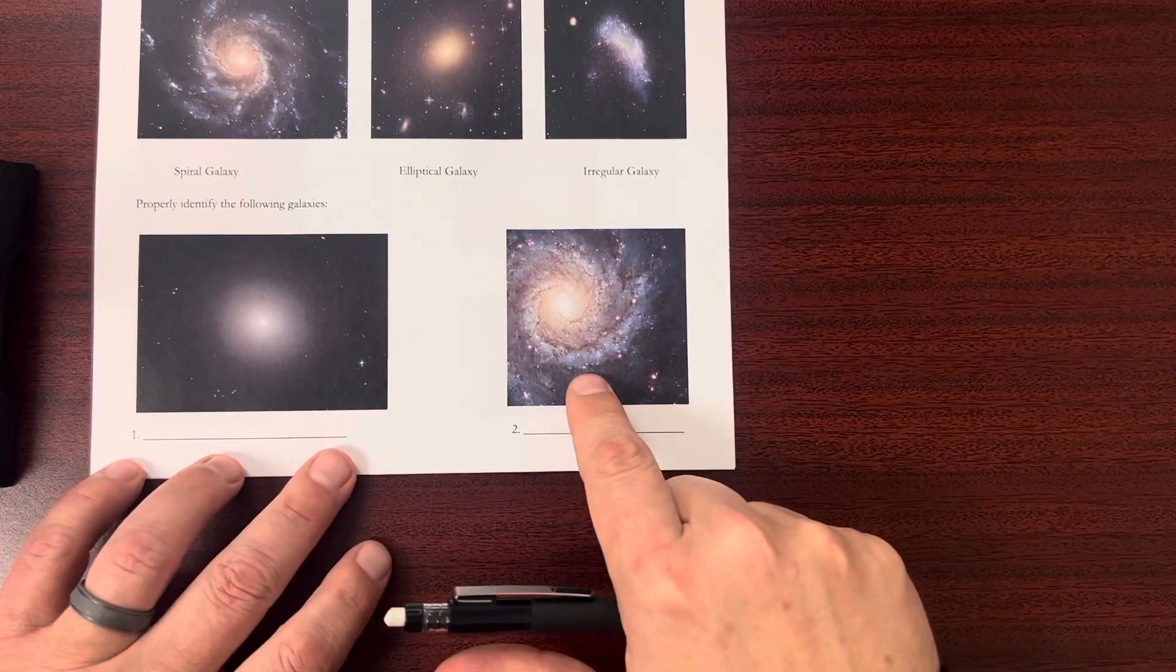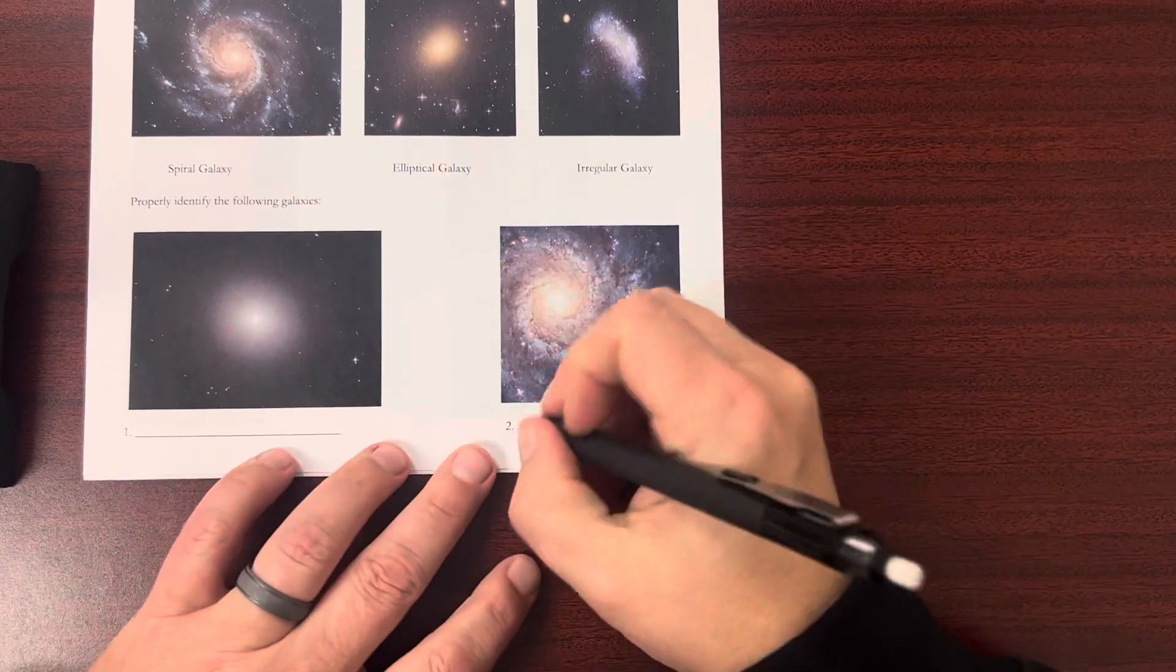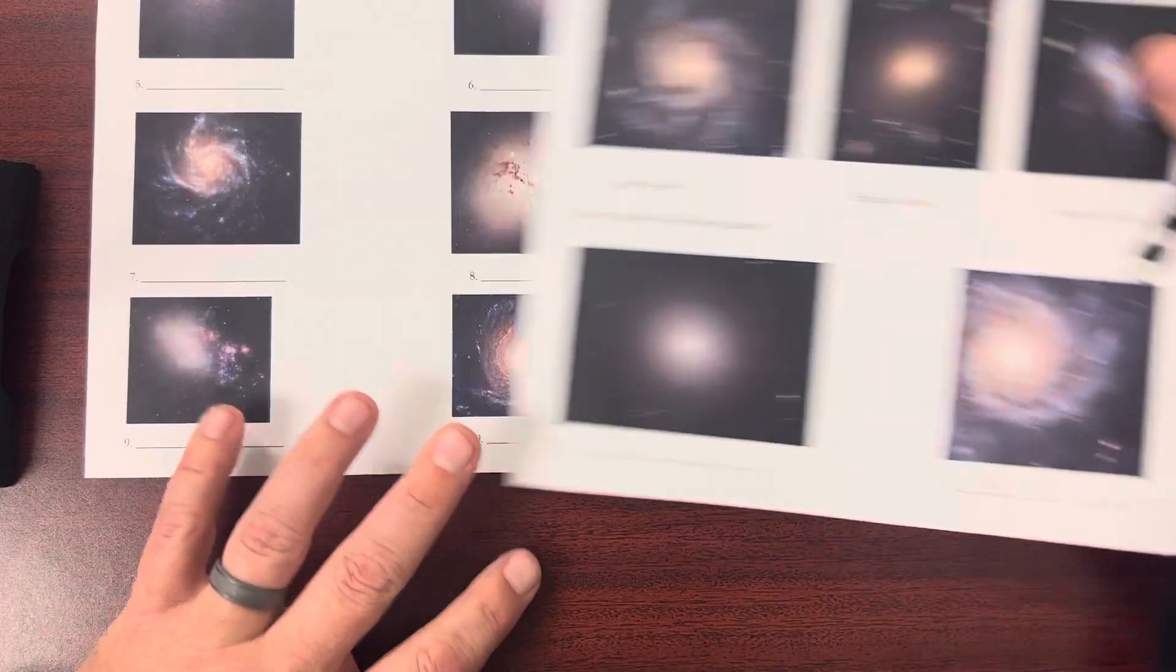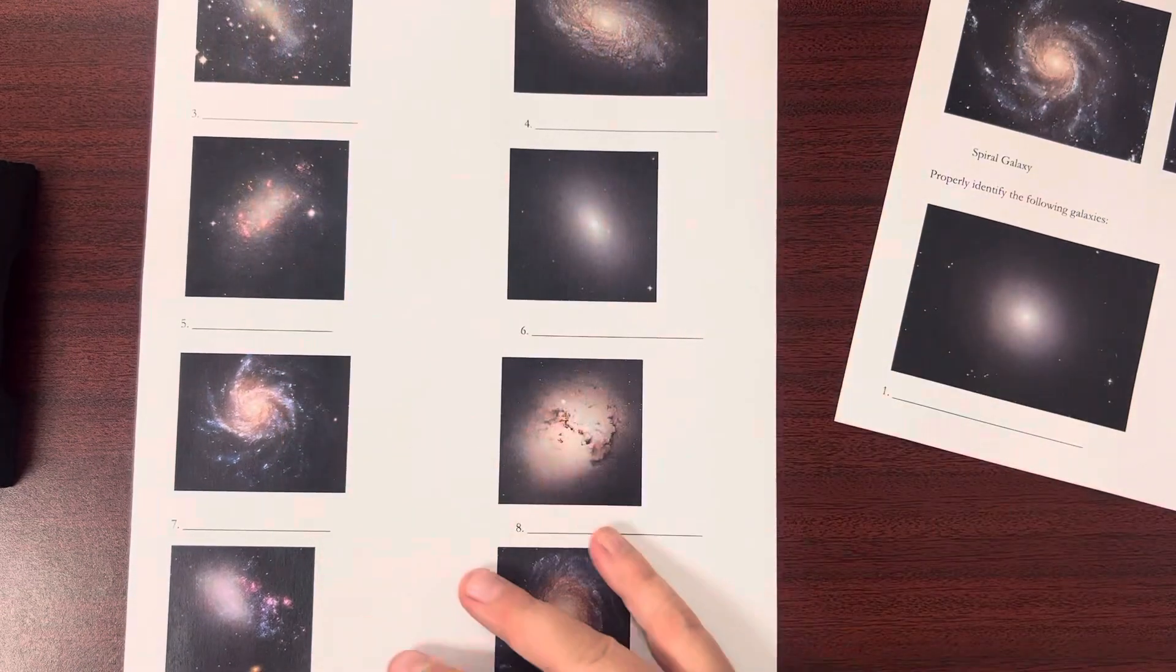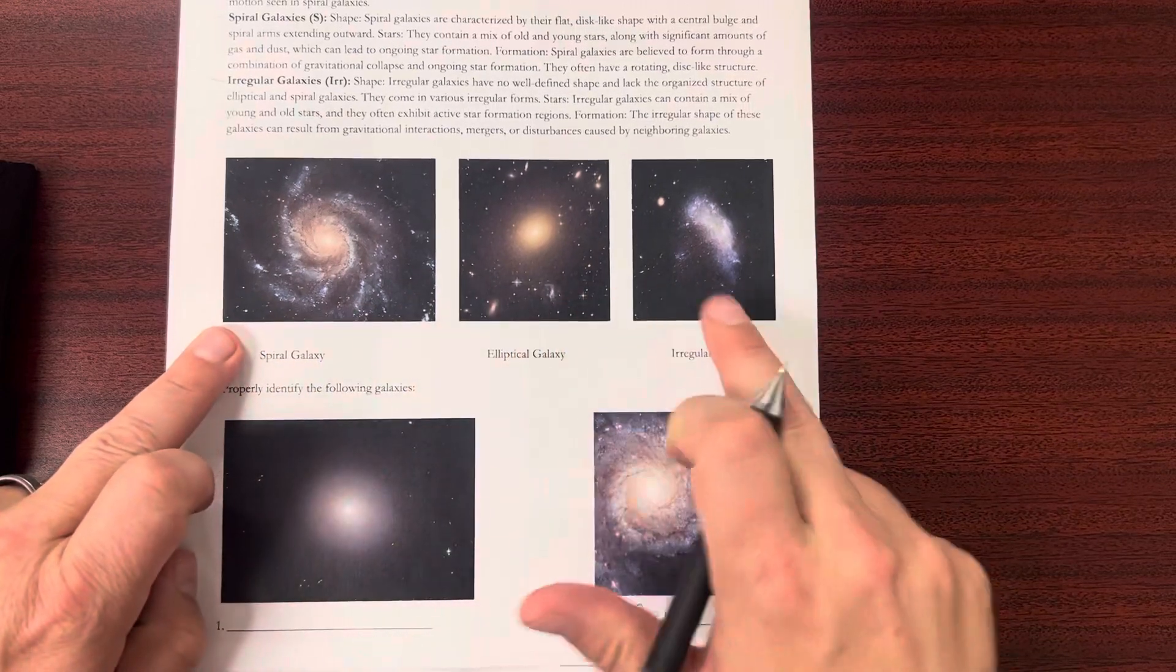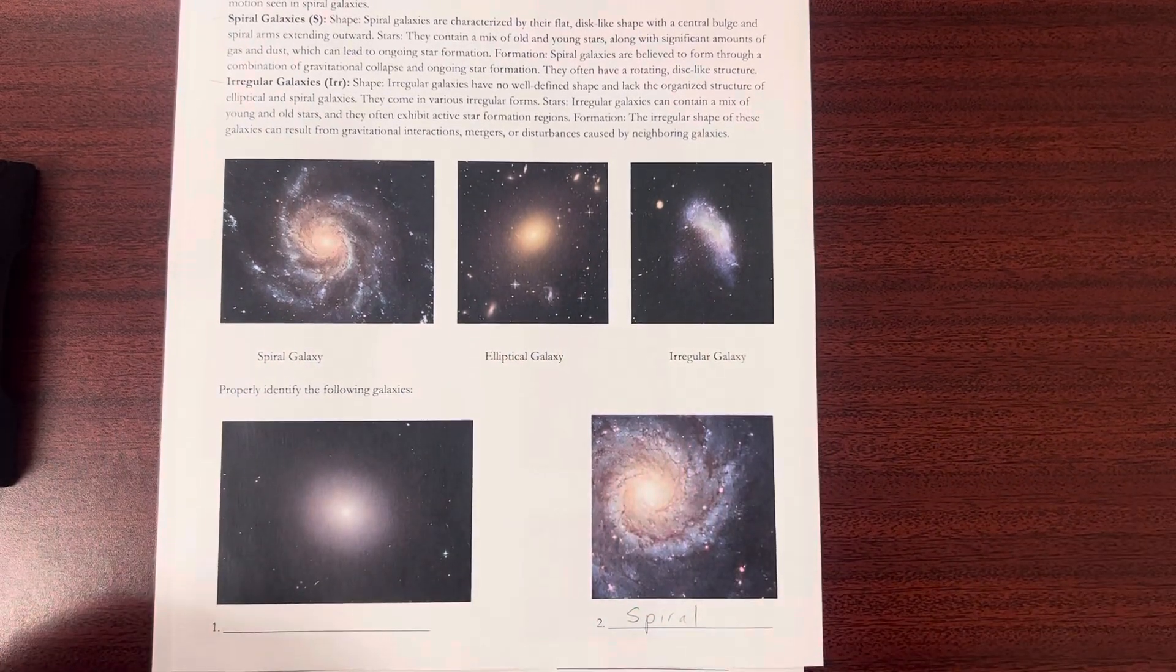So this one here, obviously, is a spiral galaxy. And you can just put spiral. That's it. And you'll do the same for each of these here, making your best guess as far as which of the three it is. All right. Thank you very much.